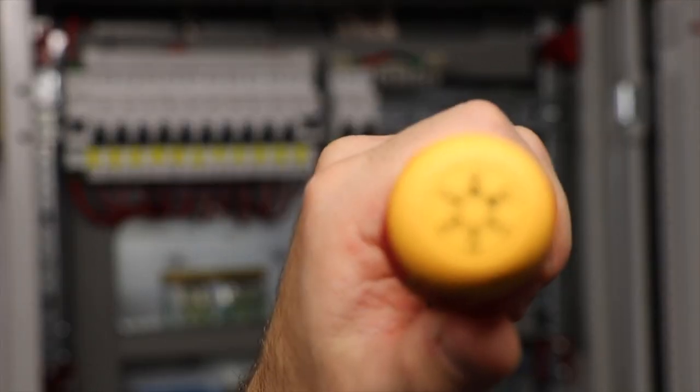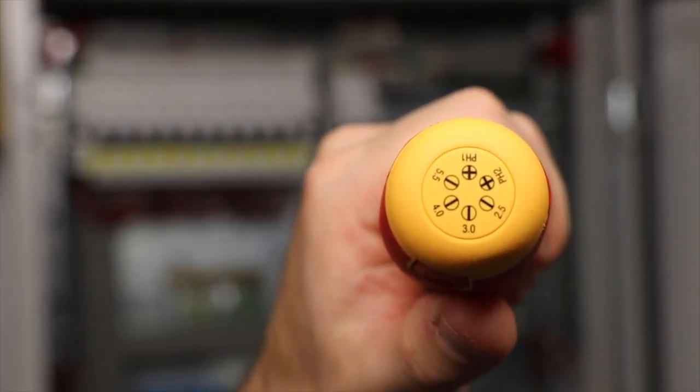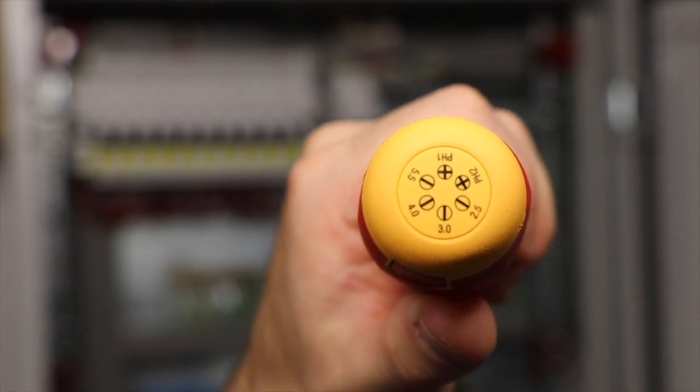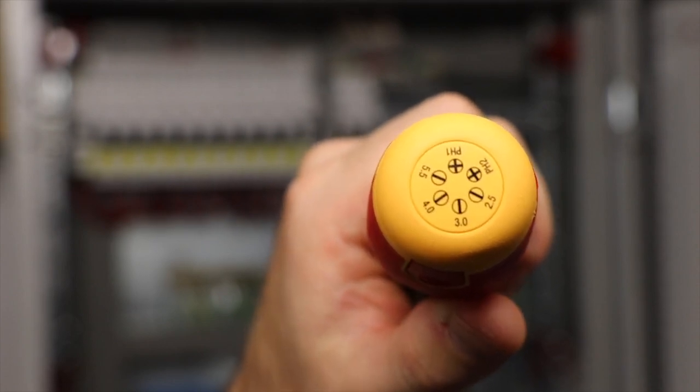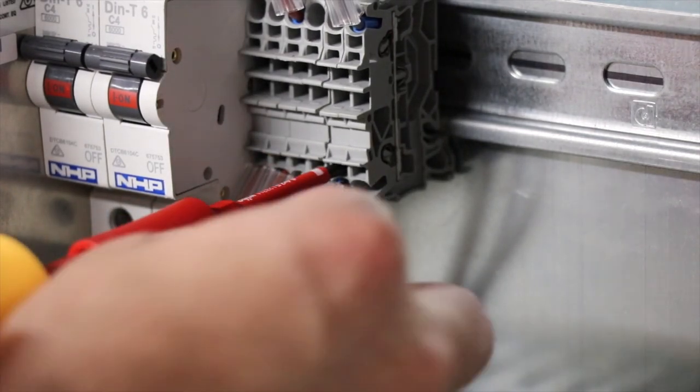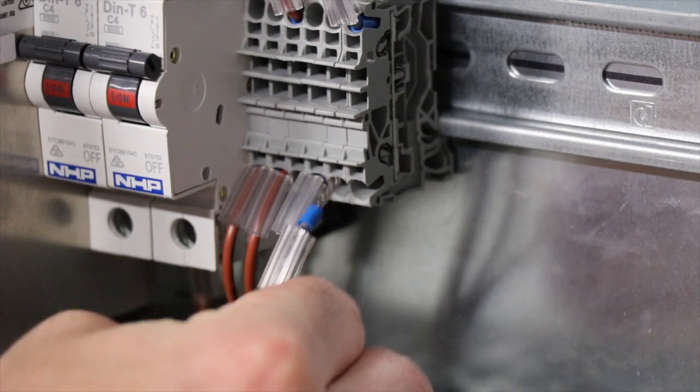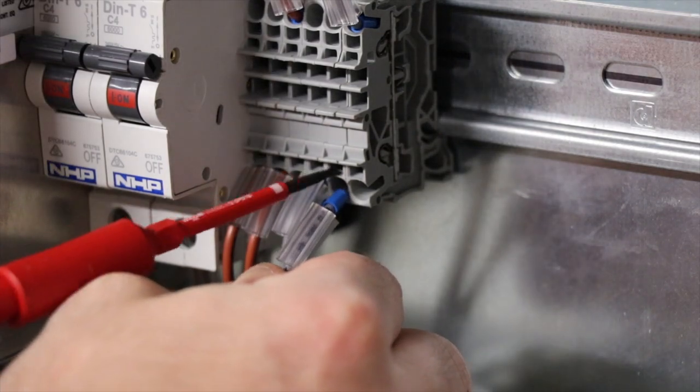Inside the handle, there are six slim screwdriver bits: a Phillips 1, a Phillips 2, and flat tips in 2.5, 3, 4, and 5.5 millimeters. I'm really happy they made the smallest flat tip 2.5 mil, as it's suitable for most small terminals and spring clamp type terminals.